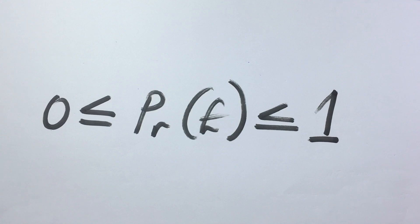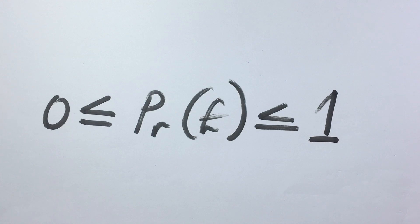Let us quickly recall certain concepts from set theory. A null set was defined to be the set containing no element, so any set with no element is a null set, and its cardinality is zero. We also defined the universal set to be the largest set under consideration. We shall use both the null set and the universal set in this video.